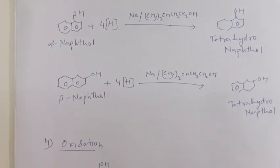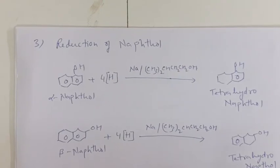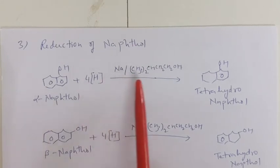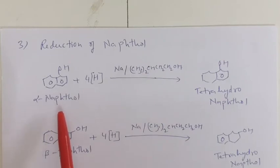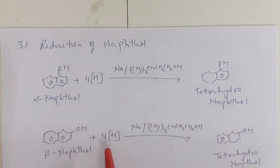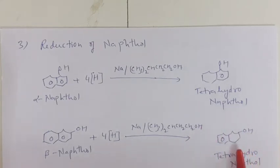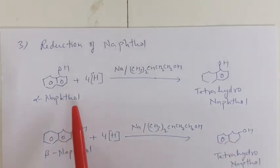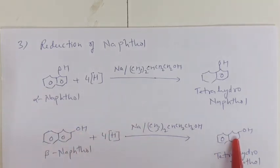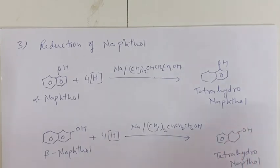The next reaction of naphthol is reduction. Alpha or beta naphthol reacts with hydrogen in the presence of sodium and isopropyl alcohol. If we take alpha naphthol then we get tetrahydronaphthol. If we take beta naphthol then we get the tetrahydronaphthol in which the OH group is present on the alicyclic ring, because beta naphthol is more reactive than alpha naphthol. The ring on which the OH group is present undergoes reduction because it is the more reactive ring, and that ring becomes saturated, giving tetrahydronaphthol with the OH group on the alicyclic ring.